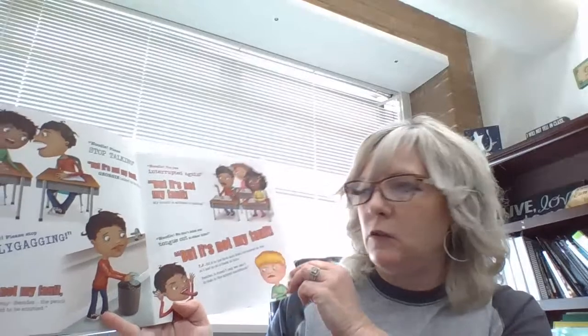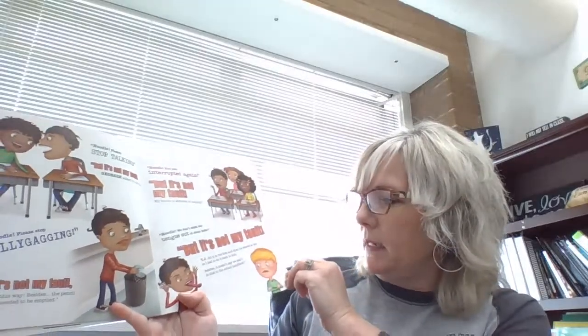Noodle, please stop talking. But it's not my fault. George talked to me first. Noodle, please stop lollygagging. But it's not my fault. I was born this way. Besides, the pencil sharpener needed to be emptied. Noodle, you just interrupted again. But it's not my fault. My mouth is addicted to talking. Noodle, we don't stick our tongue out at other kids. But it's not my fault. TJ did to me first, and then he stared at me. So I had to do it back to him. Besides, it doesn't say we can't do that in the school handbook.